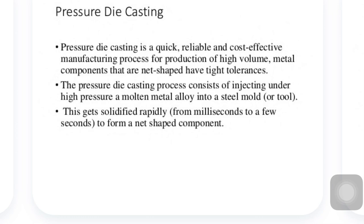The pressure die casting process consists of injecting molten metal alloy under high pressure into a steel mold. The molten metal is injected under high pressure into the steel mold which is used as a tool. It gets solidified rapidly — solidification starts within a fraction of a second to a few seconds — and forms a net-shape component.